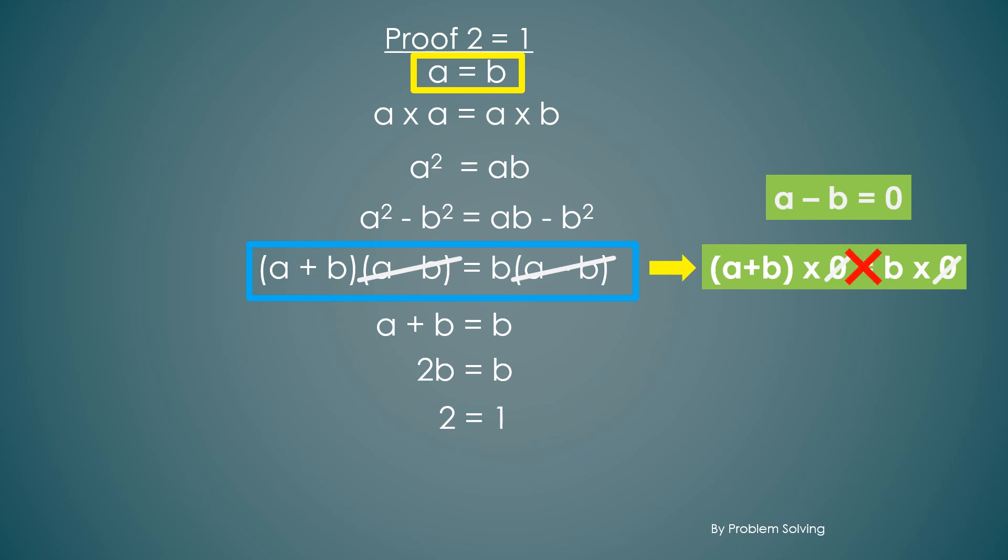With this we can prove that any two numbers are the same. For example 1000 and 20. 1000 times 0 is equal to 20 times 0. So if we cut the 0 and 0 we get 1000 equal to 20 which is also wrong.